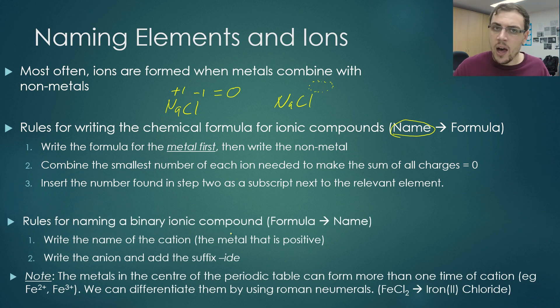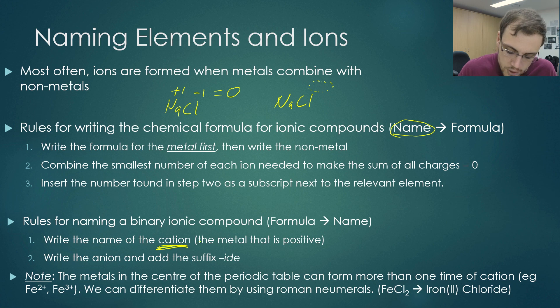Let's say we get given it the other way around. Let's say we're given a chemical formula, and we have to build the name from that formula. What we do is, is we write the name of the cation first. This is the one that's positive, and it's generally on the left-hand side of the periodic table, remembering that you've got all your metals. You then write the anion, and you add the suffix. Suffix means end of the word, I-D-E.